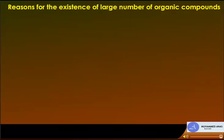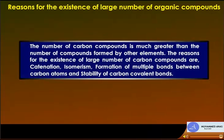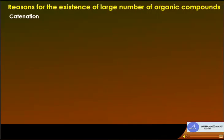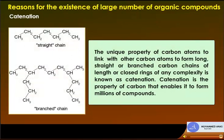The number of carbon compounds is much greater than the number of compounds formed by other elements. The reasons for the existence of large numbers of compounds are catenation, isomerism, formation of multiple bonds between carbon atoms, and stability of carbon covalent bonds. Catenation is the unique property of carbon atoms to link with other carbon atoms to form long, straight, or branched carbon chains or closed rings of any complexity.